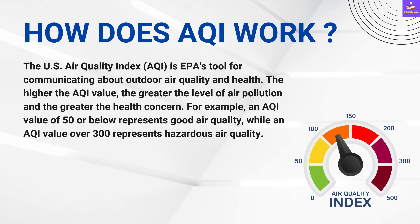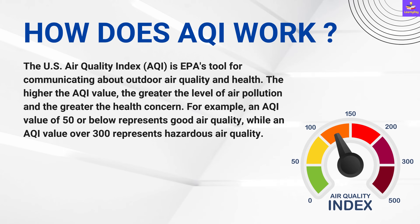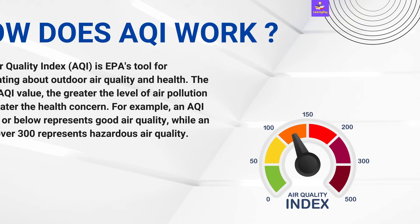How does AQI work? The US Air Quality Index is the EPA's tool for communicating about outdoor air quality and health. The higher the AQI value, the greater the level of air pollution and the greater the health concern. For example, an AQI value of 50 or below represents good air quality, while an AQI value over 300 represents hazardous air quality.